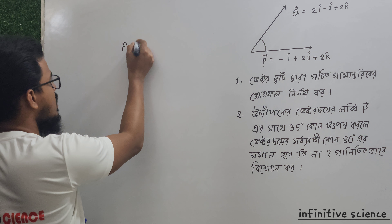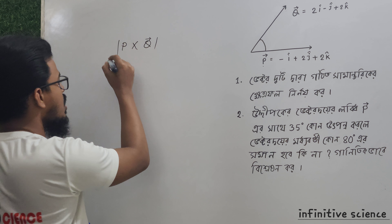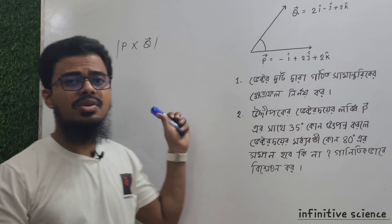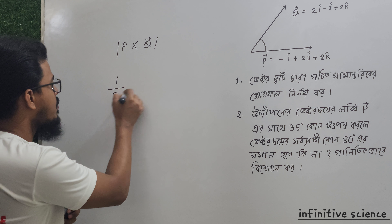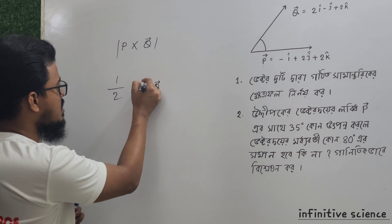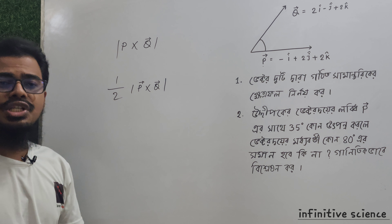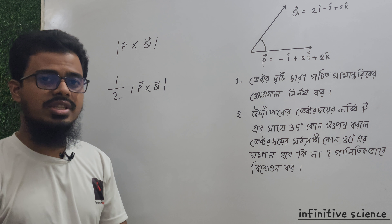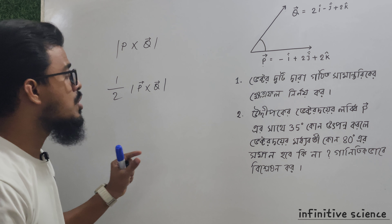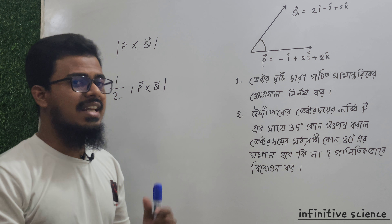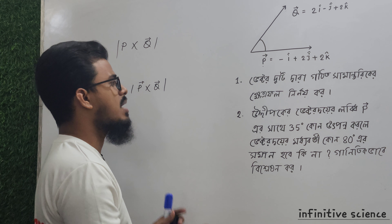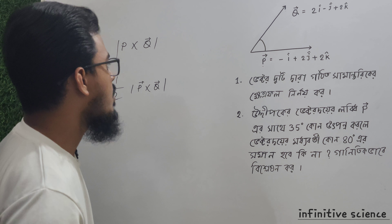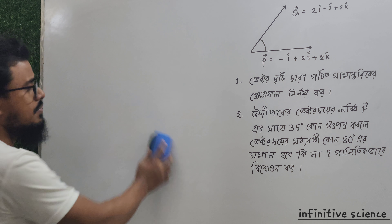We have to find P cross Q modulus. The formula for this — the area formula — is half of P cross Q modulus. This is the formula we are talking about. The P cross Q modulus formula is used here. Now with P cross Q modulus, we also consider the QR cross component.